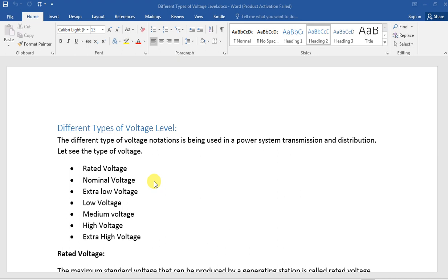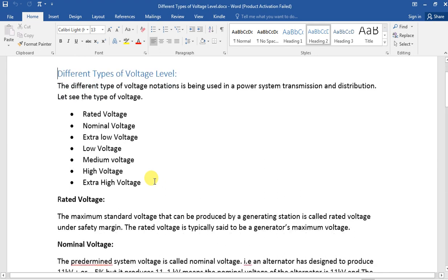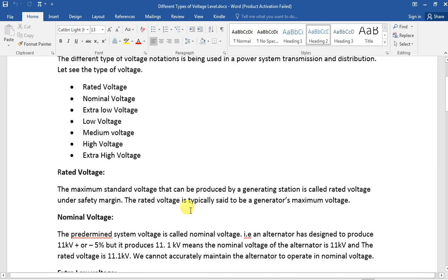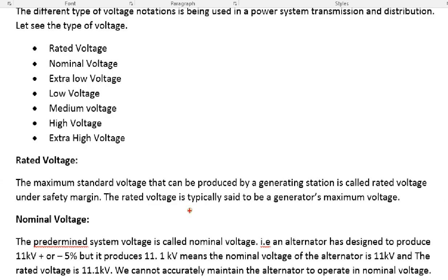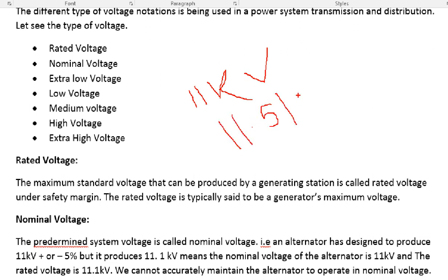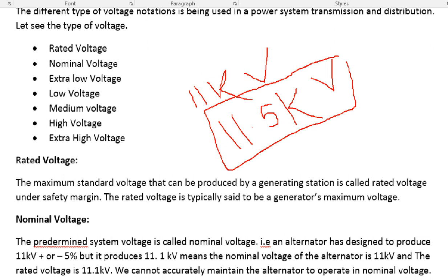So what is rated voltage? Rated voltage refers to the maximum voltage — for example, if you have an 11kV generator, you can go up to 11.5kV in that range. That is rated voltage — that is the standard definition.